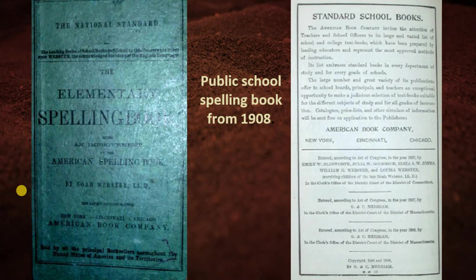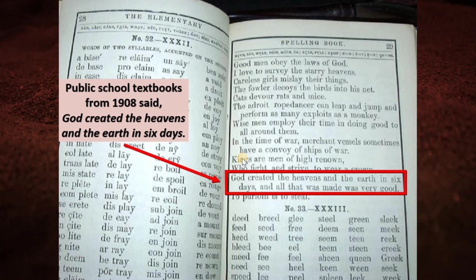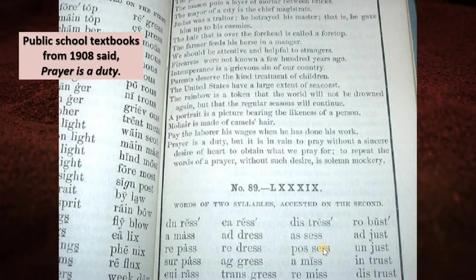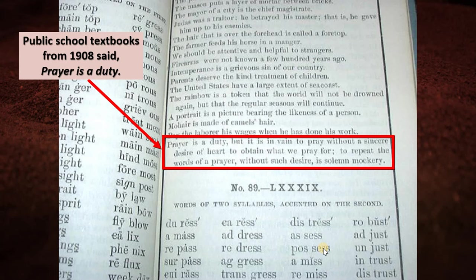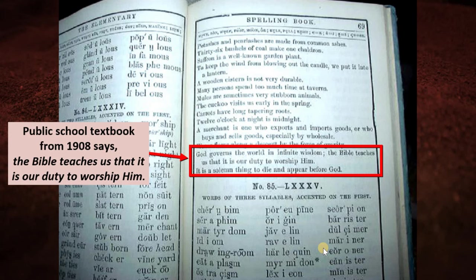Here's a public school spelling book from 1908 — over a hundred years ago. It says, 'God created the heavens and the earth in six days, and all that was made was very good.' It also says prayer is a duty, but it is in vain to pray without a sincere desire of heart. To repeat the words of a prayer without such desire is solemn mockery. It also talks about our duty to worship God and that it is a solemn thing to die and appear before God.